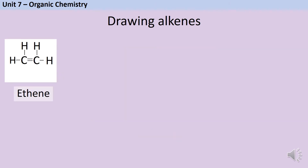Just like with alkanes, you need to be able to draw and name the first four alkenes. The only difference is that rather than carbon chains of between one and four carbons as for the alkanes, for the alkenes the carbon chain will be from two to five carbons. It's important to remember that each one of these molecules will only contain one double bond.